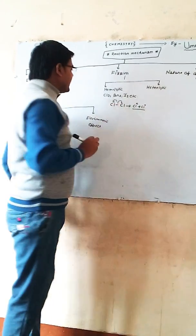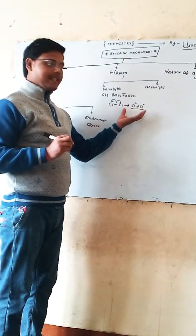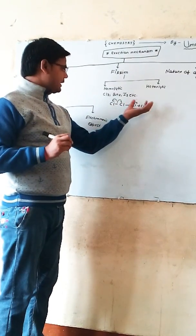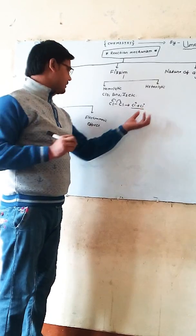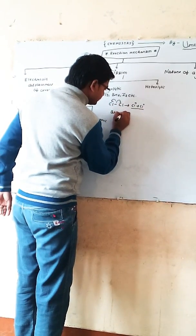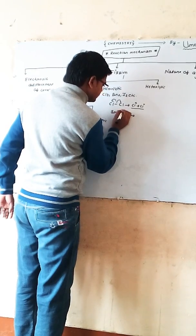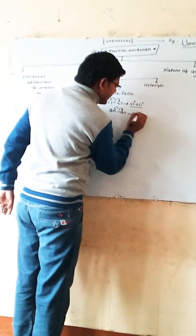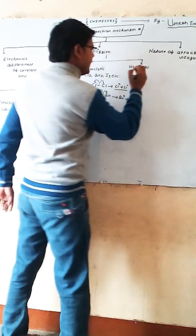Homolytic fissures are those fissions which occur in the same types of elements. For example: Cl → Cl free-radical plus Cl free-radical; Br → Br free-radical plus Br free-radical.